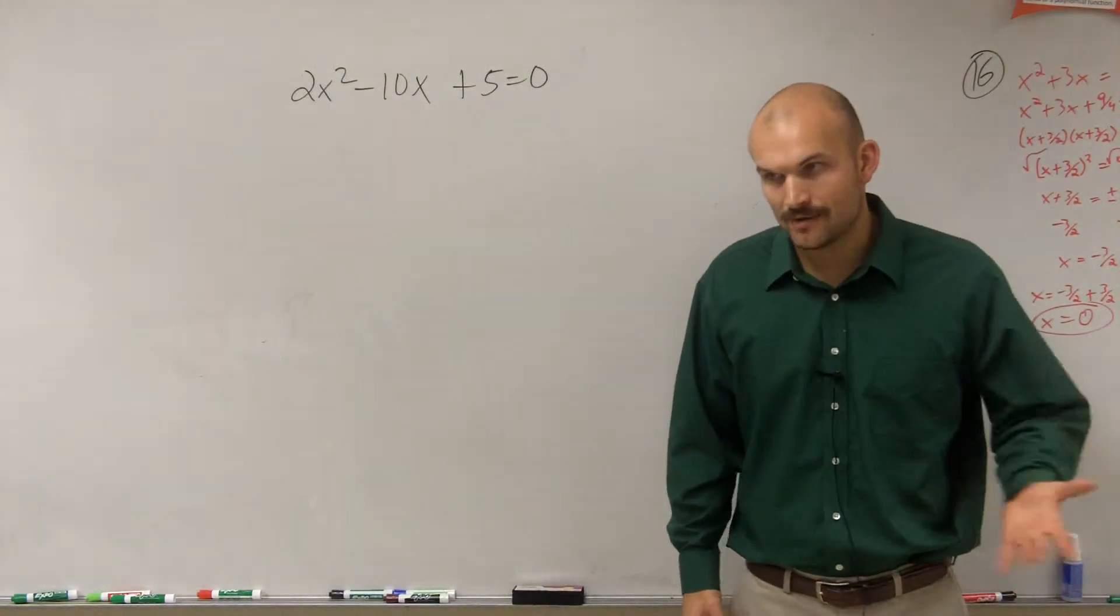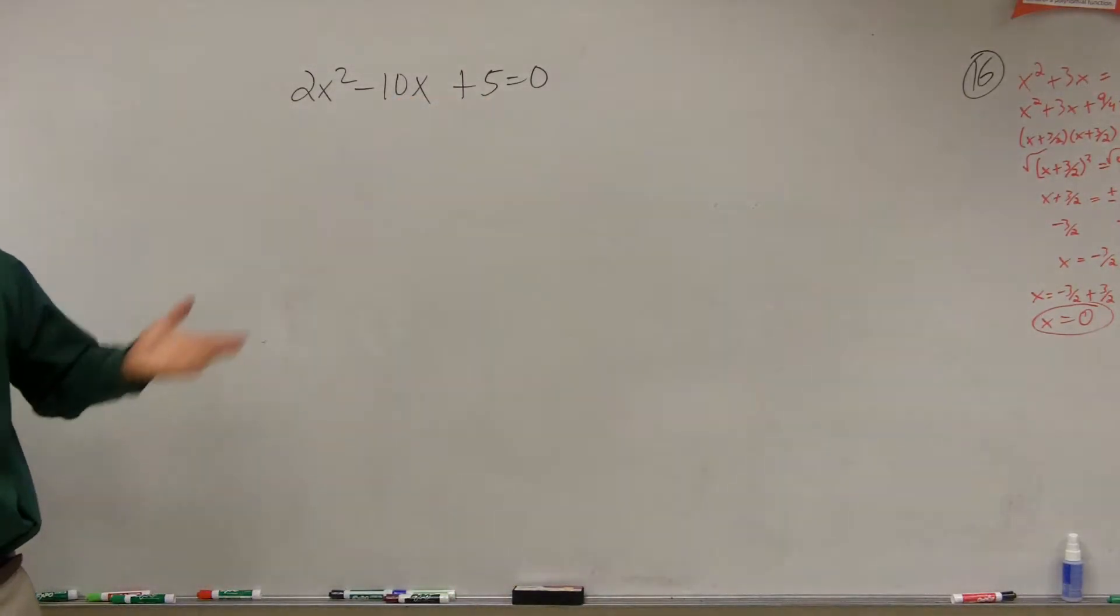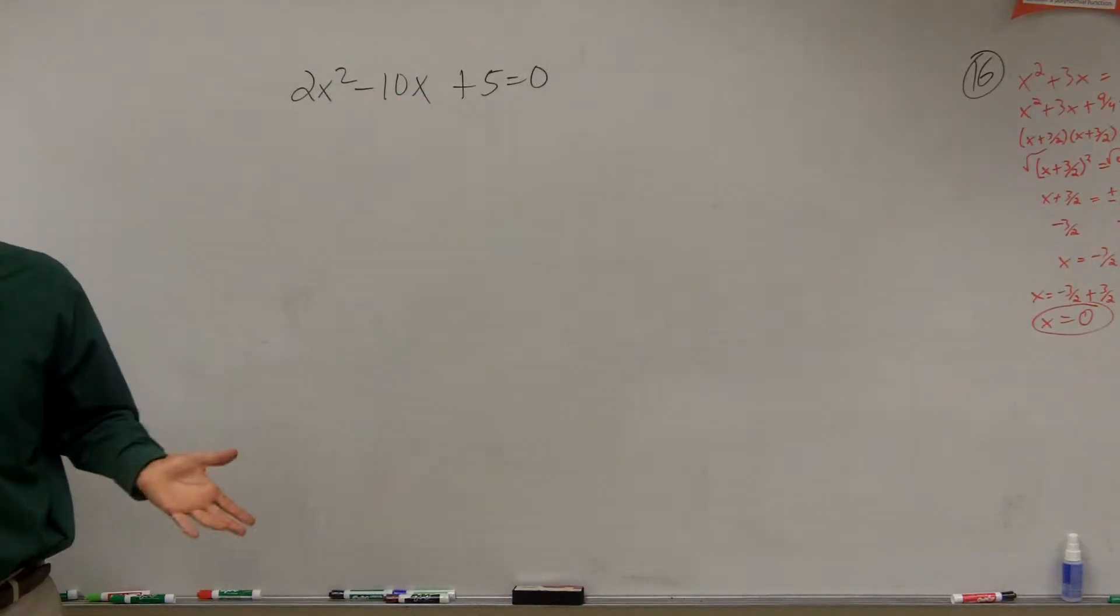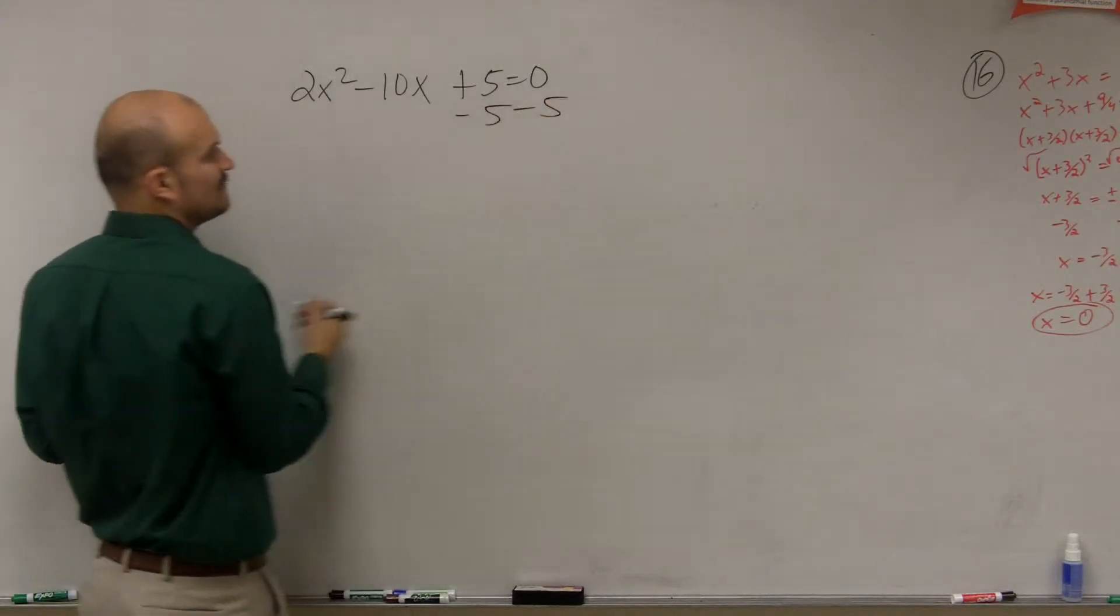So how are we going to get around there? Or how are we going to complete the square when we have an a that's equal to 2? Well, one thing is you can always factor out that 2. So what we're going to do is first, just like we've done before, is get the 5 to the other side.